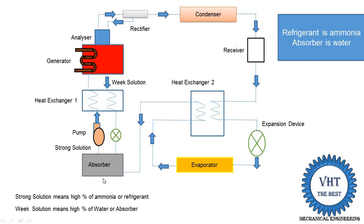In the absorber, water is available, so water and ammonia mix to create a strong solution. Strong solution means a high percentage of ammonia refrigerant; weak solution means a higher percentage of absorber (water). This strong solution is supplied into the generator by using a pump. In the pump, the pressure of the strong solution is increased up to 10 bar, then it goes through heat exchanger 1 into the generator. In the generator, heat energy is supplied using electric heaters, solar energy, waste gas, or waste steam from industries — any heat source can be used.